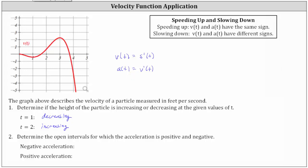So let's analyze the graph from left to right, determining where it's increasing and where it's decreasing. Notice from t equals zero to t equals one, the velocity function is going downhill from left to right, and therefore decreasing over this interval. Then from t equals one to t equals three, the velocity function is increasing. And then from three to infinity, the velocity function again is decreasing.